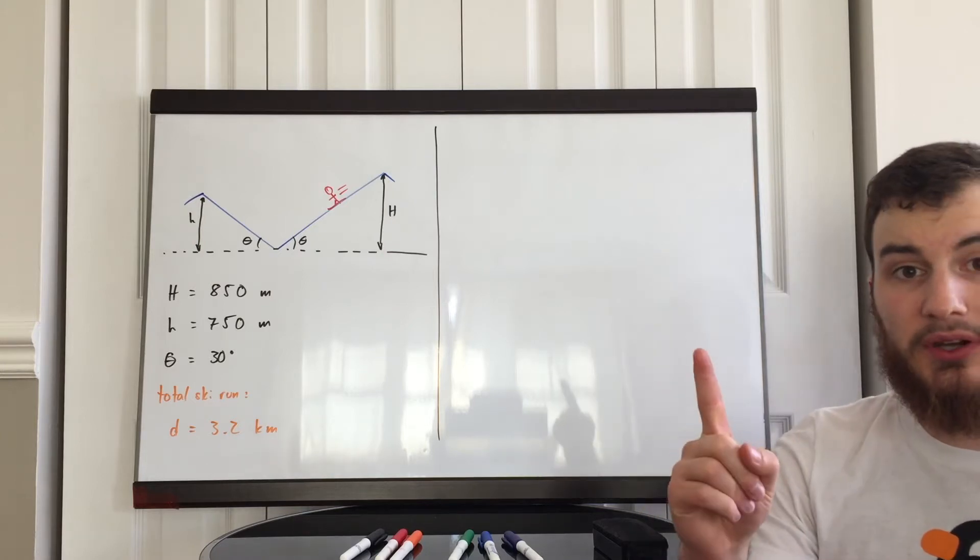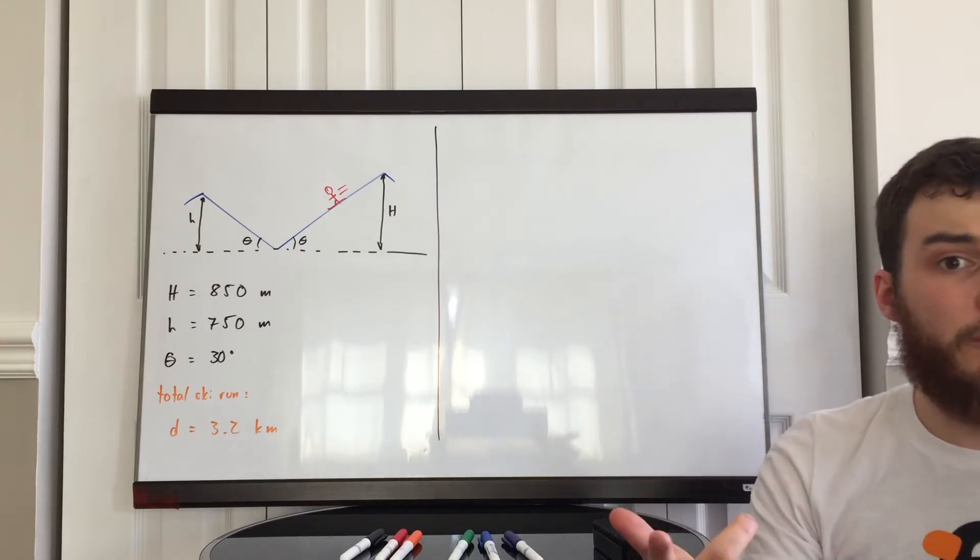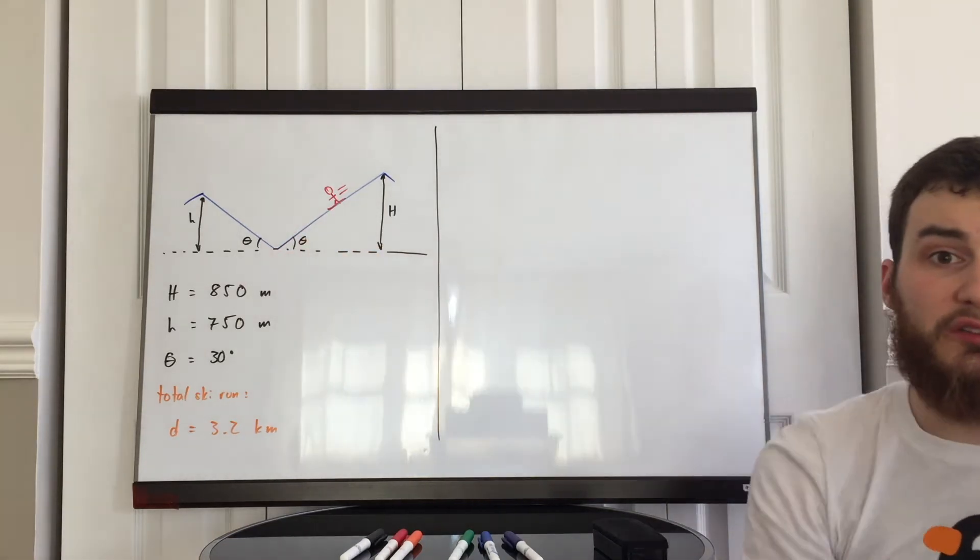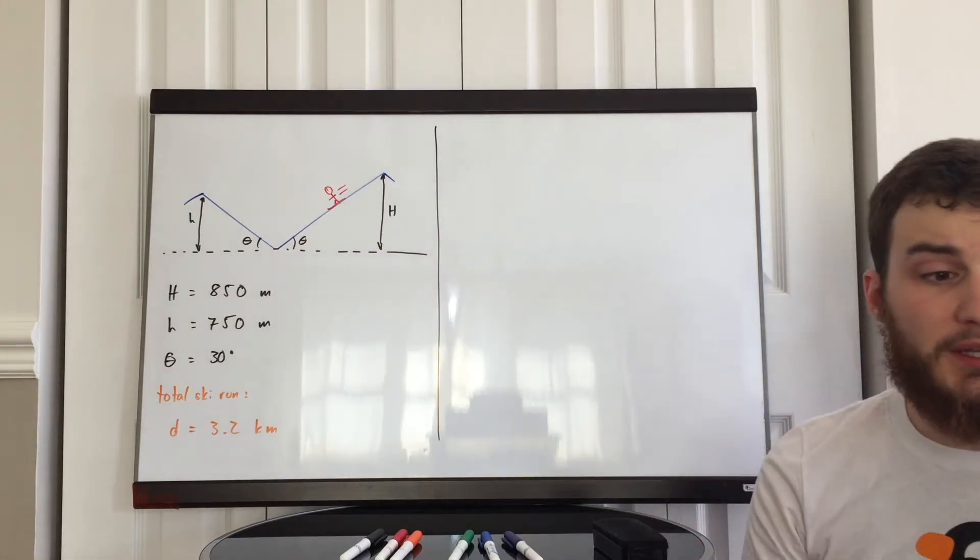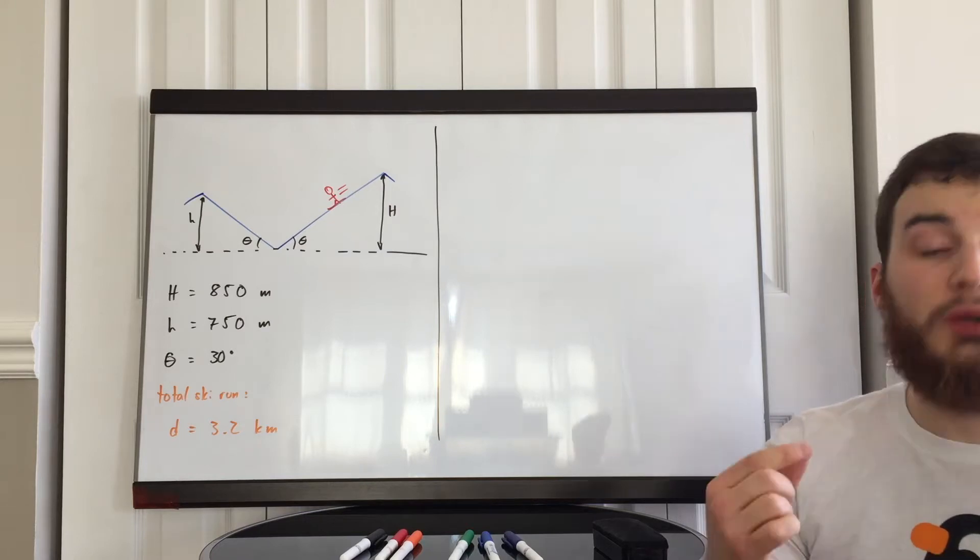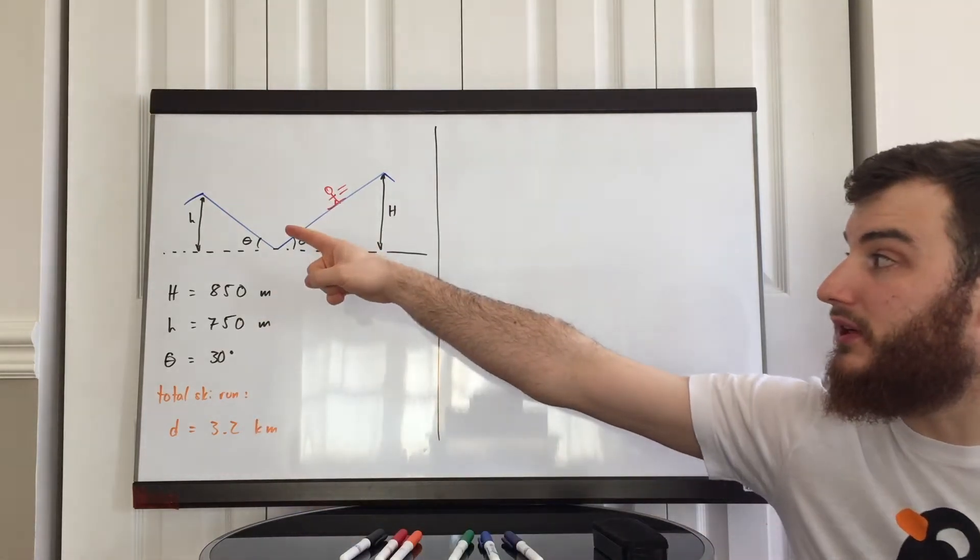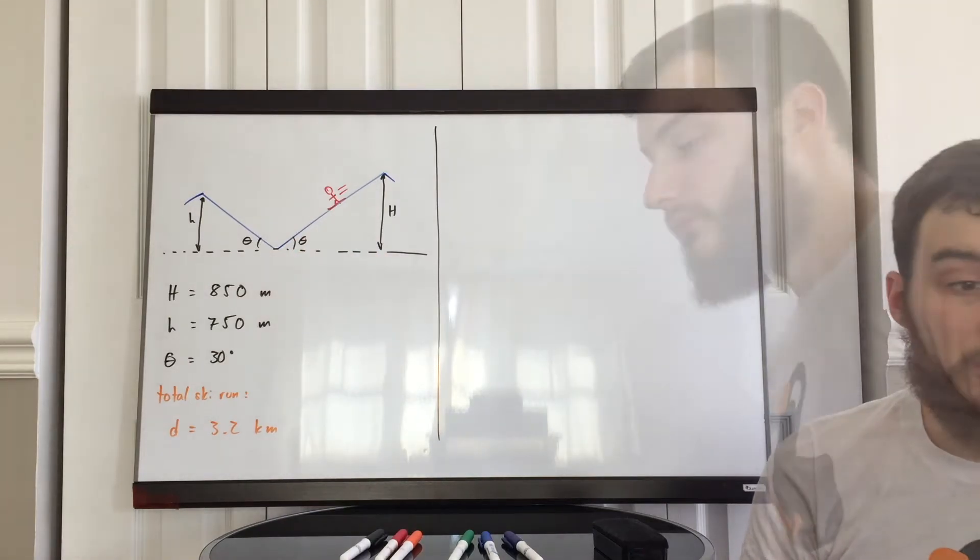We are asked to find two things. In part a, if there is no friction, at what speed will the skier reach the summit of peak small h? In part b, if there is friction, what would be the coefficient of friction for him to have zero speed exactly at the summit of small h?